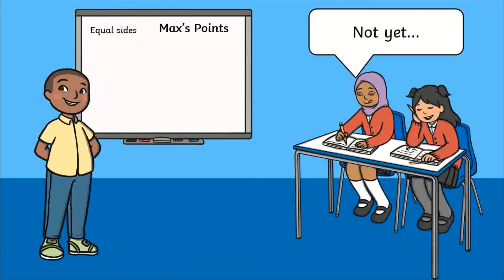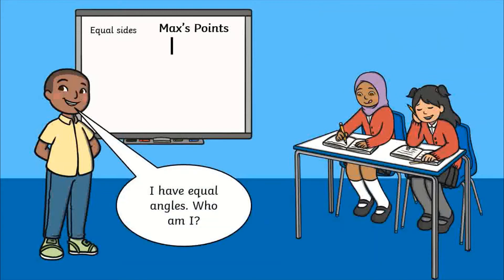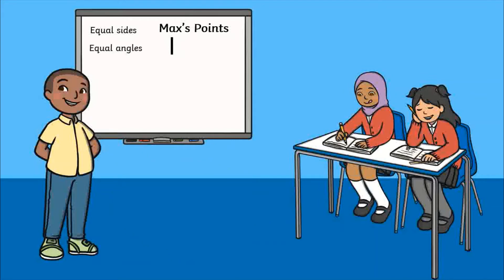For every clue they read without the audience guessing correctly, the riddler gets a point. To stop random guessing, if the audience guesses incorrectly, the riddler also gets a point.